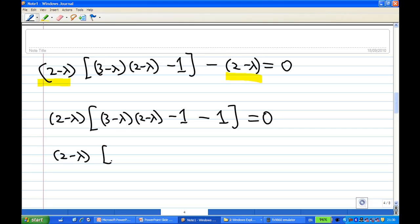And this will give me (2-λ)[(3-λ)(2-λ) - 2] = 0. (2-λ) times [λ² - 5λ + 6 - 2], which is 4, equals 0.